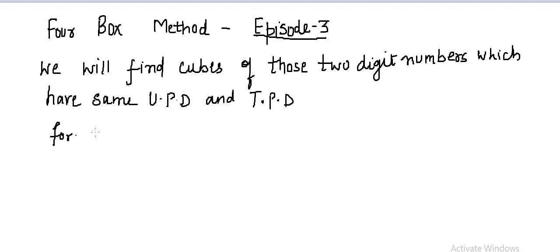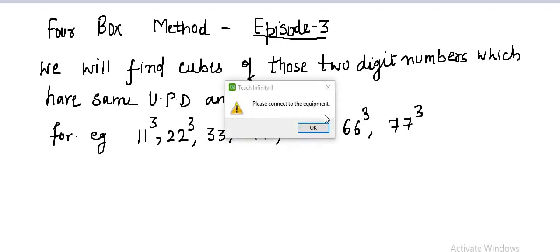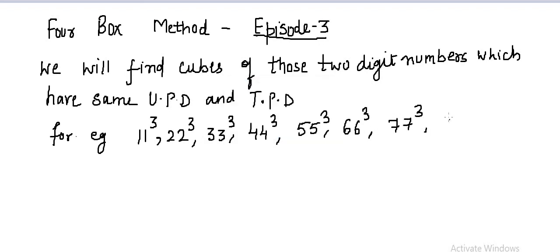For example, in 11, the units place and tens place digit are the same. So this method can be used to calculate 11 cube, 22 cube, 33 cube, 44 cube, 55 cube, 66 cube, 77 cube, 88 cube, and 99 cube.